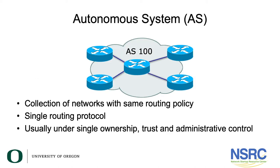When we talk about autonomous systems, we mean a collection of networks with the same routing policy and single routing protocol. ASs are usually under single ownership, trust, and administrative control.